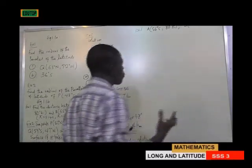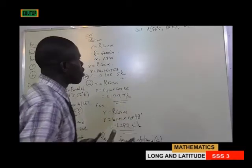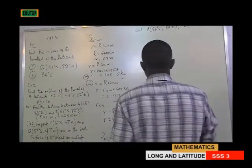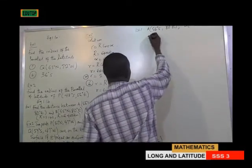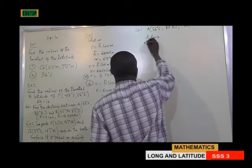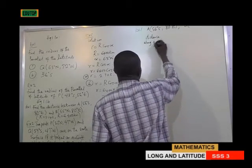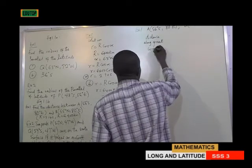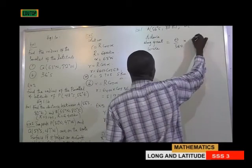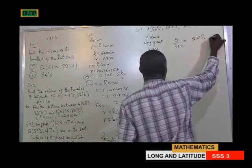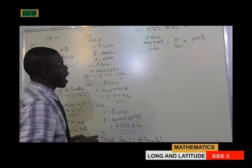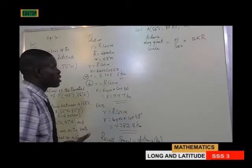We want to calculate distance along great circles. The formula for distance along great circles is: distance = θ/360 × 2πR. That is the formula for calculating distance along great circles.